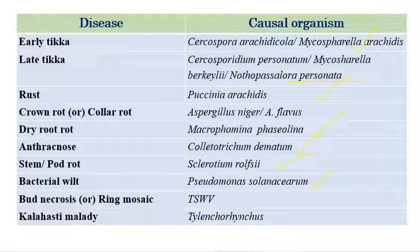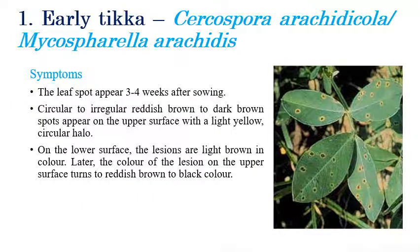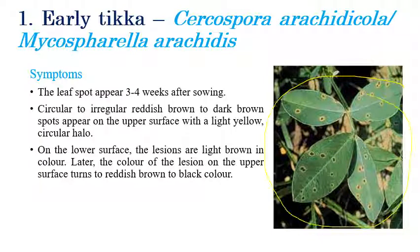The first disease is Early Tikka, caused by Cercospora arachidicola or Mycosphaerella arachidis. This disease can be visualized three to four weeks after sowing. We can clearly see circular dark brown or reddish brown spots along with a yellow halo. The yellow halo is a very important diagnostic feature.